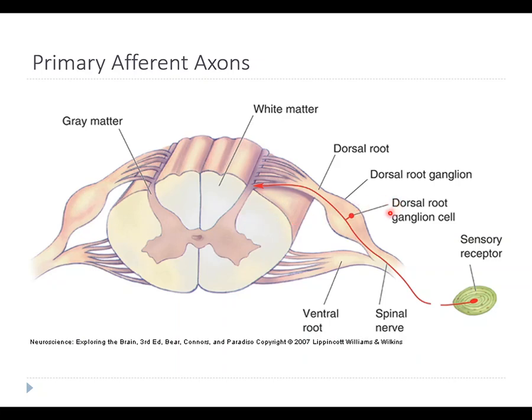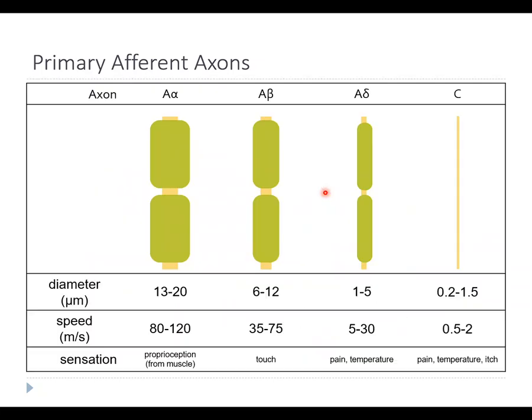These neurons are kind of special that way. The peripheral processes of these cells come in different varieties — there are basically four categories of primary afferent axons, categorized by their diameter and their degree of myelination, meaning how much myelin is surrounding the axon. The A-alpha axons are the thickest, with a diameter between 13 and 20 microns, and have the most myelin. Then they go down from there: A-betas are thinner, followed by A-deltas.